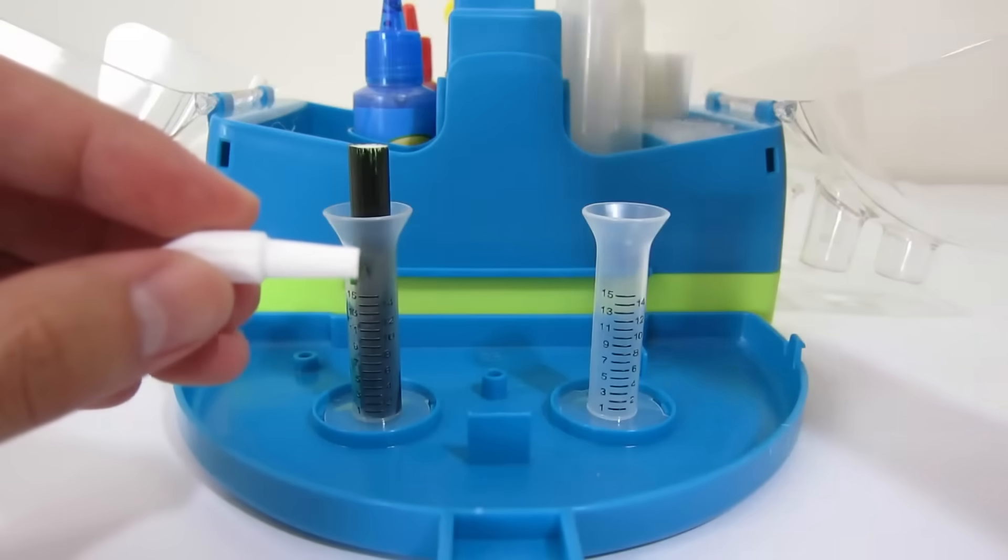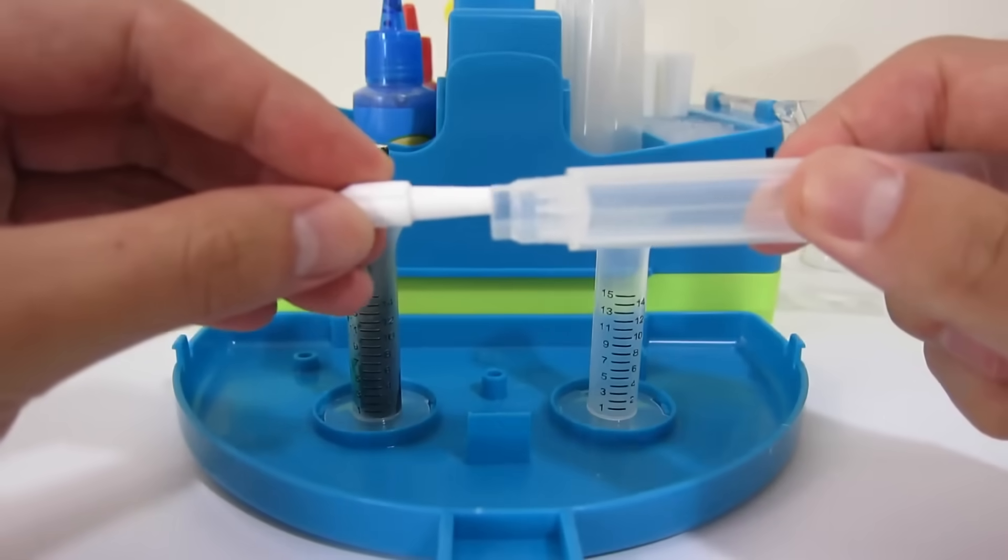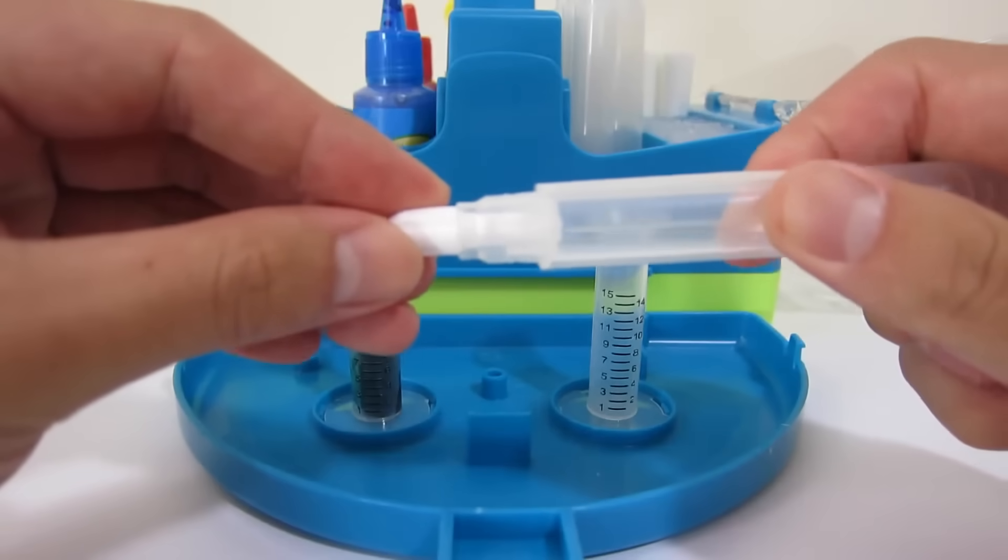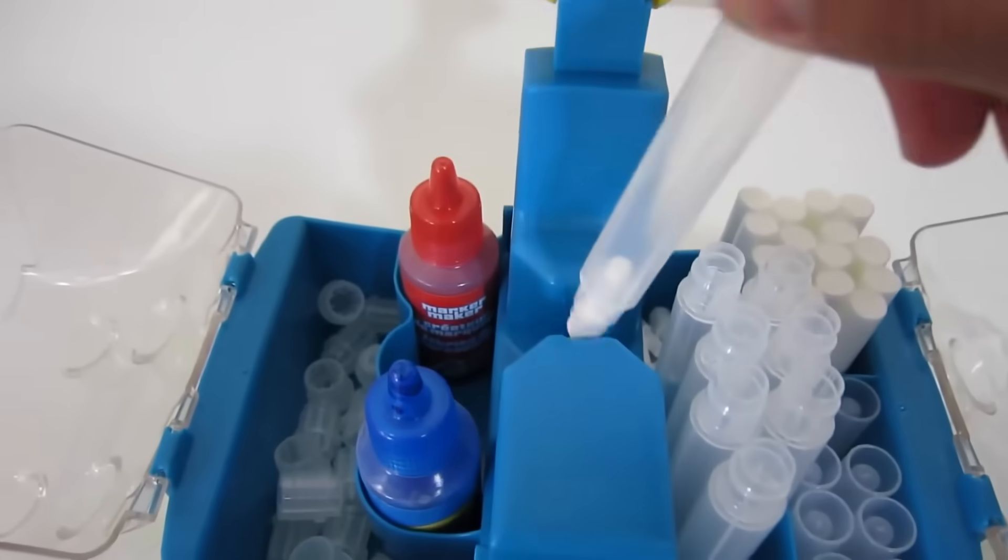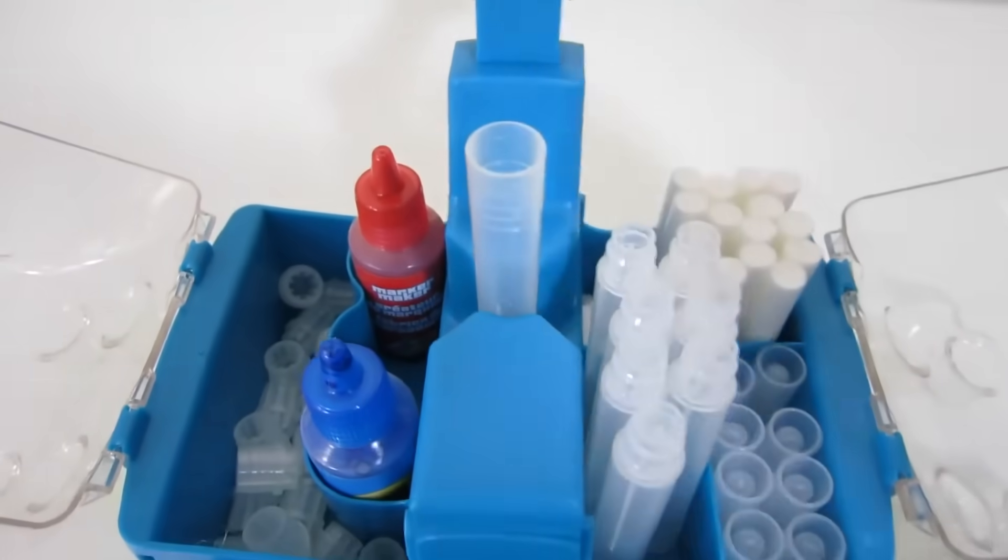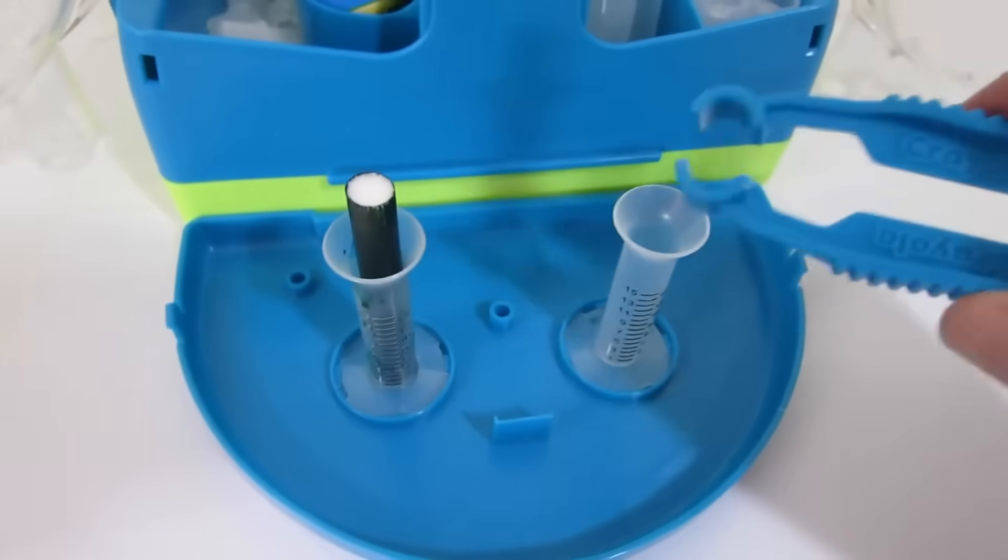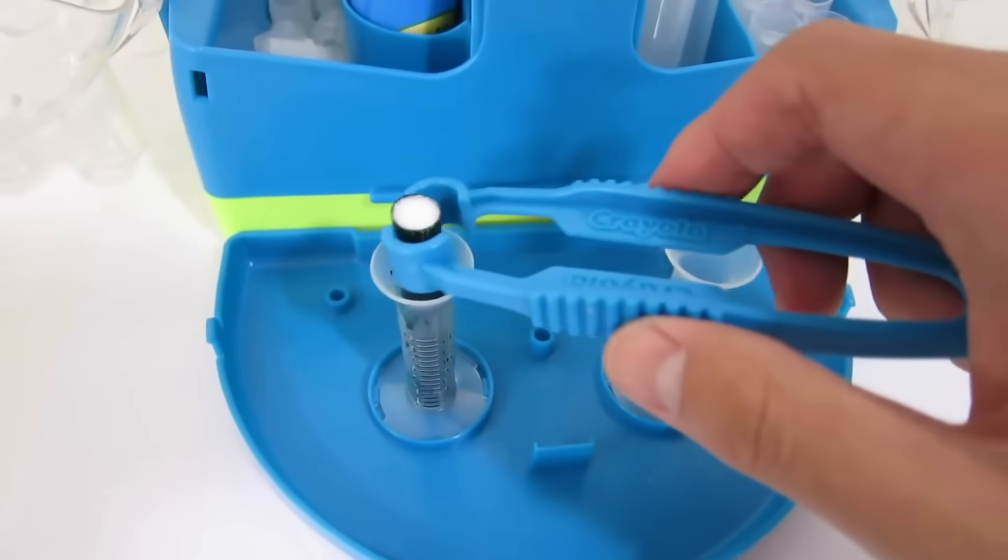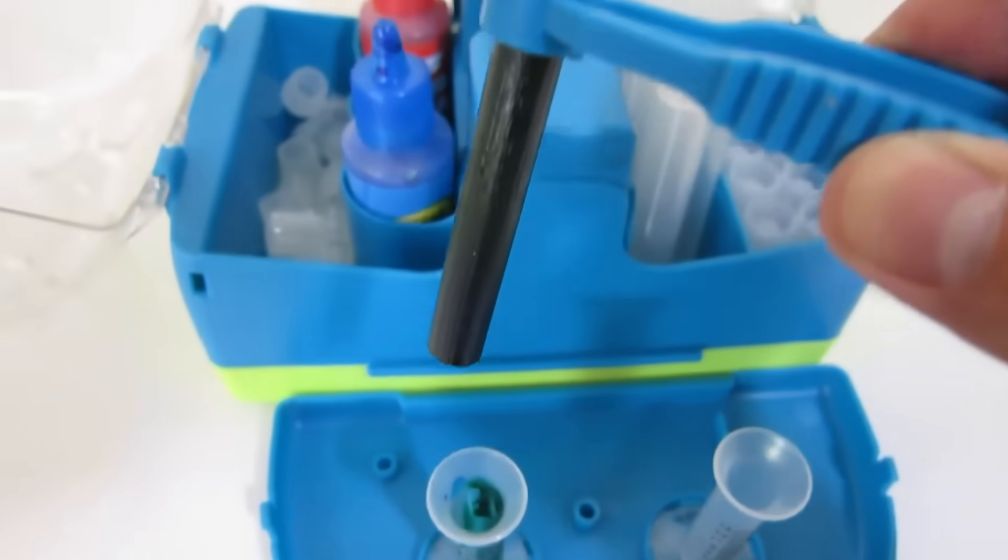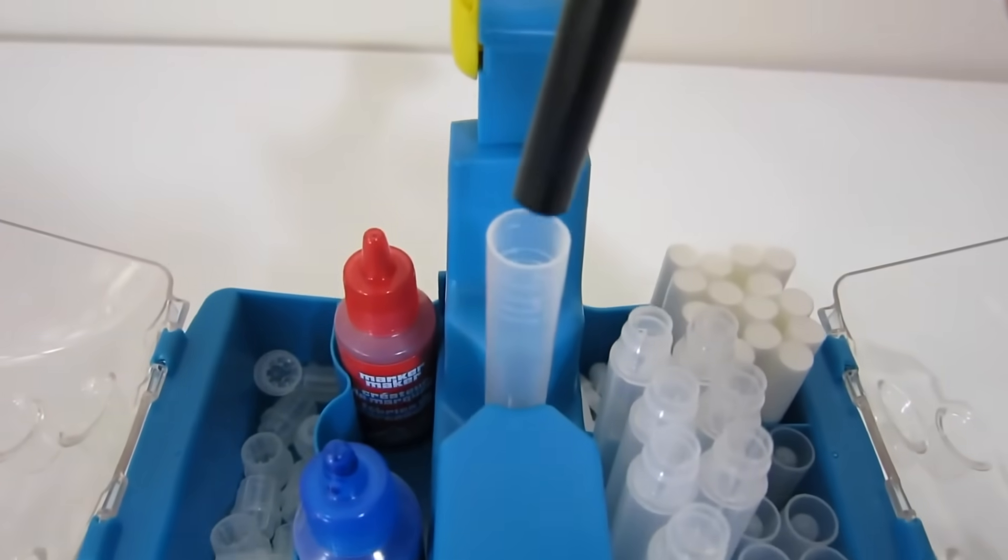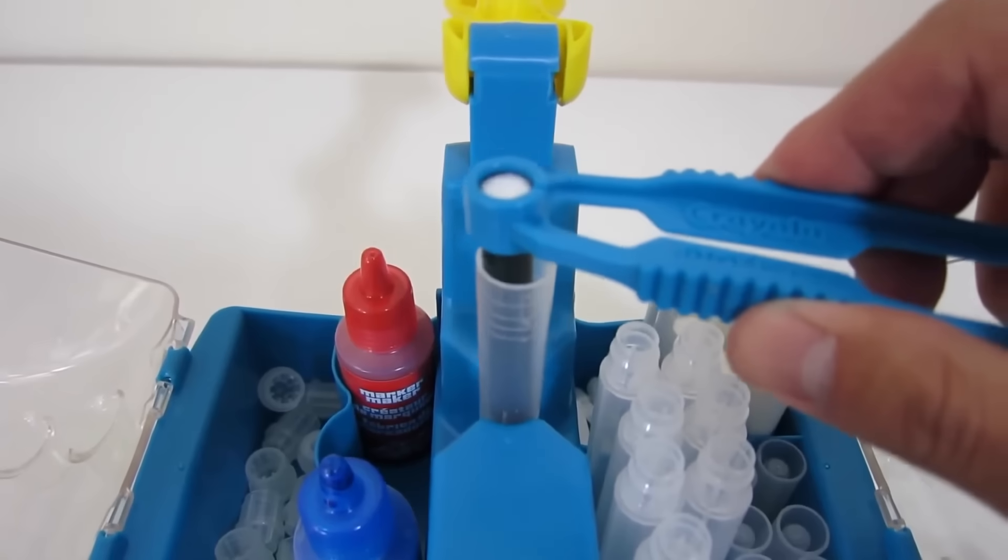Now let's get our marker tip and attach it to the marker barrel. Place it in the middle of the set. This is where we'll be making our marker. Now let's grab our Crayola tweezer and place our marker core inside of our barrel. Use your tweezer to squeeze it in.